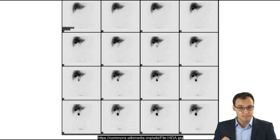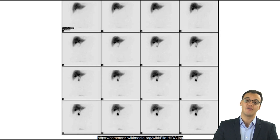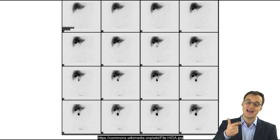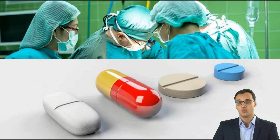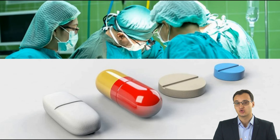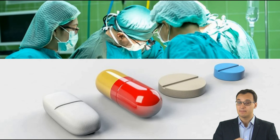We can inject morphine, which helps the liver cells to secrete bile into the gallbladder and thereby makes the diagnosis easier. We treat acalculous cholecystitis with antibiotics and surgery.